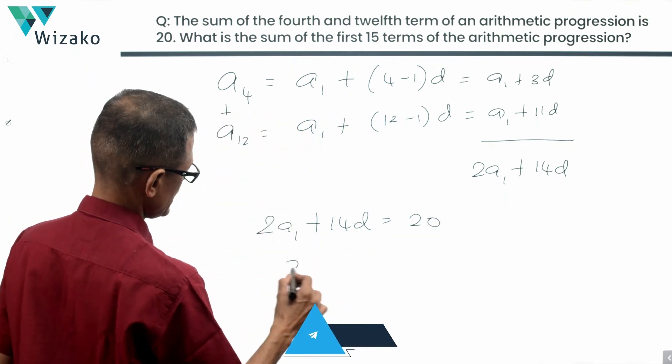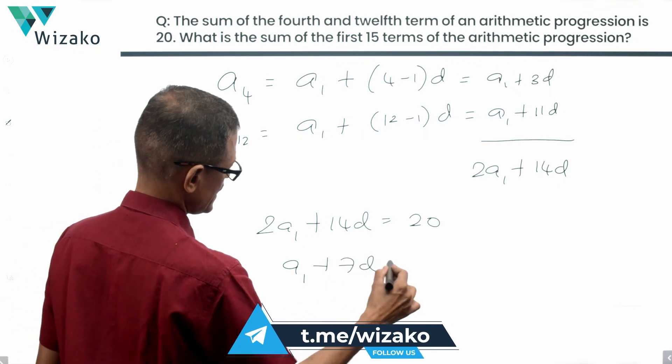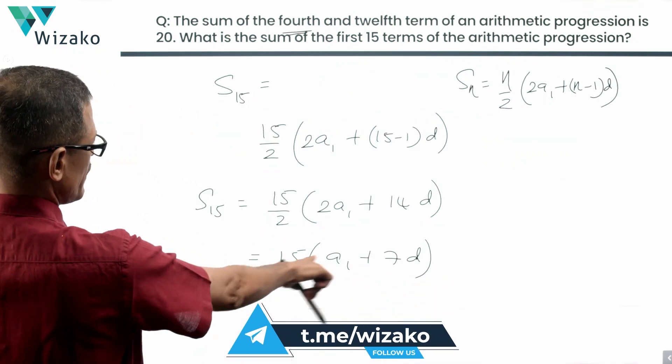Divide this entire thing by 2. So we will have A1 plus 7D is equal to 10, which is what we need it to find out the value.